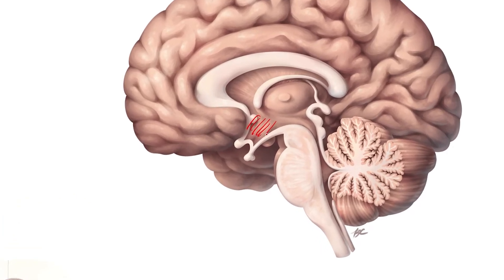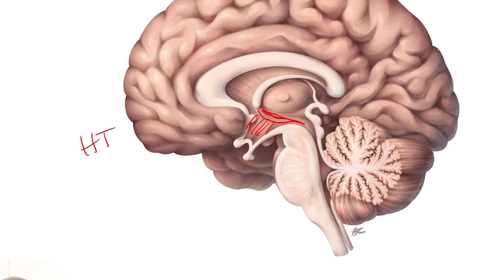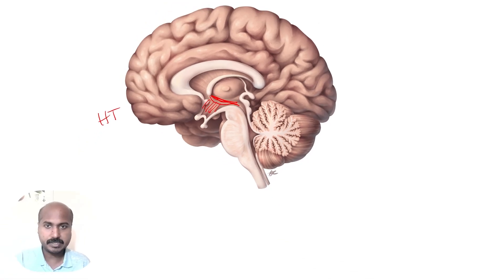This region is known as the hypothalamus because it is just below the hypothalamic sulcus — roughly here — and it is part of the diencephalon.